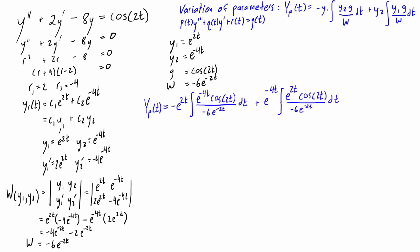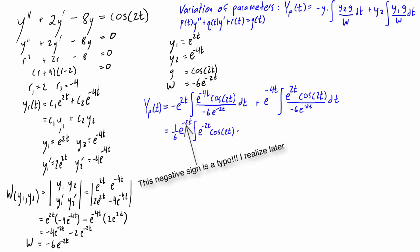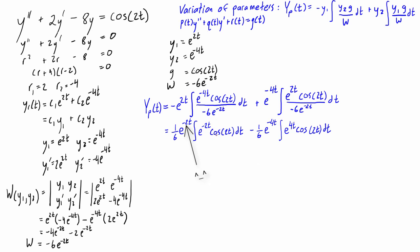Before we start the integration, we can simplify a little bit by pulling out 1/(−6) from each term and also performing the exponential division. Now this is where this method starts to get messy — we have to do integration by parts because we have e^(−2t) times cos(2t), and we'll also have to apply integration by parts to the second term. For the fast way, we pick one function to differentiate and one to integrate — it'll be easier to differentiate cos(2t) and integrate e^(−2t).